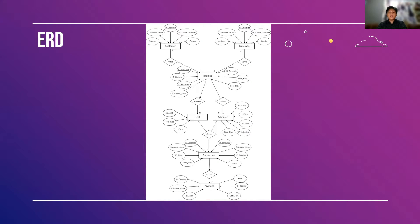ERD, or Entity Relationship Diagrams, provide a visual starting point for database design that can also be used to help determine information system requirements throughout an organization. After a relational database is rolled out, an ERD can still serve as a reference point should any debugging or business process re-engineering be needed later. However, while an ERD can be useful for organizing data that can be represented by a relational structure, it cannot sufficiently represent semi-structured or unstructured data, and is unlikely to be helpful on its own in integrating data into pre-existing information systems.